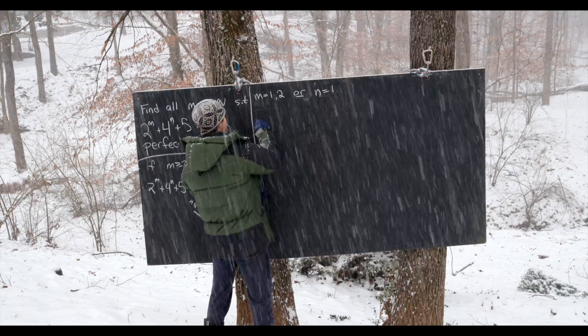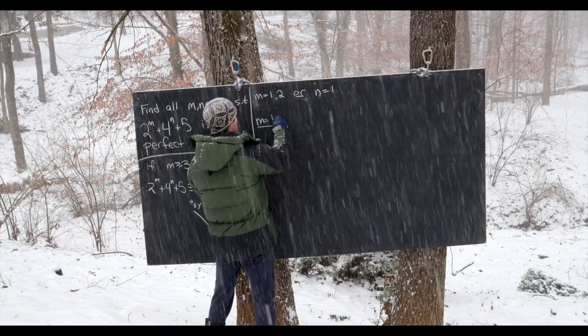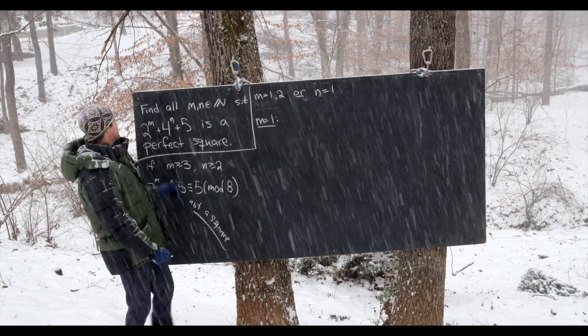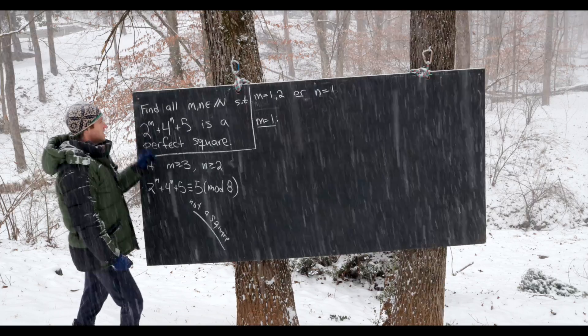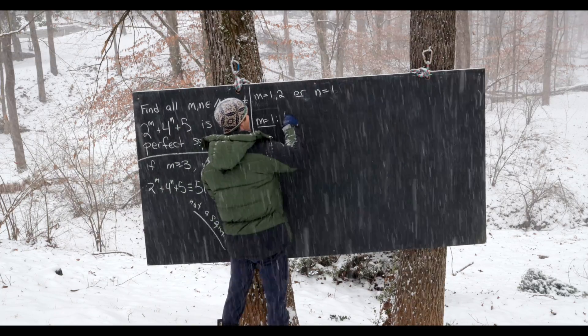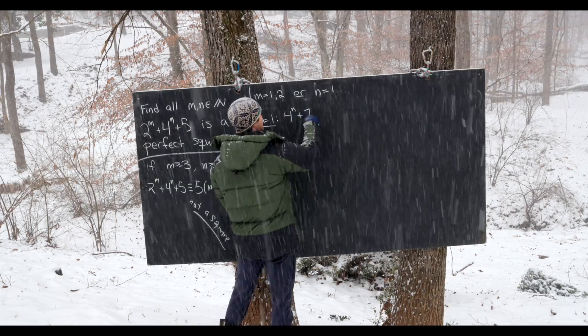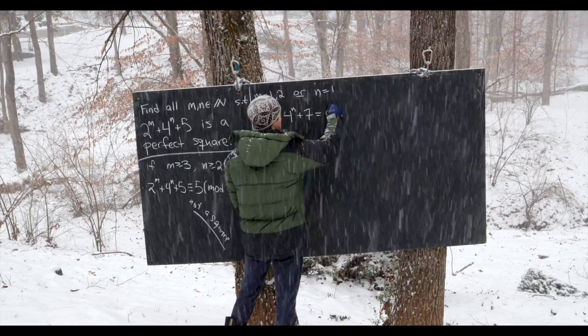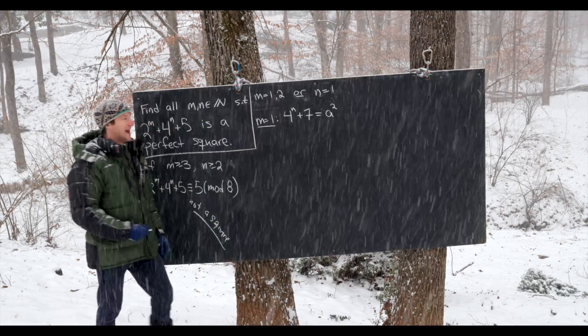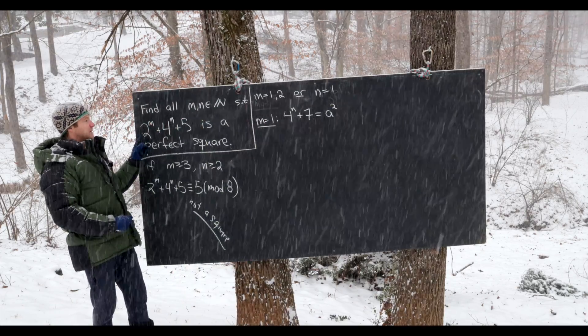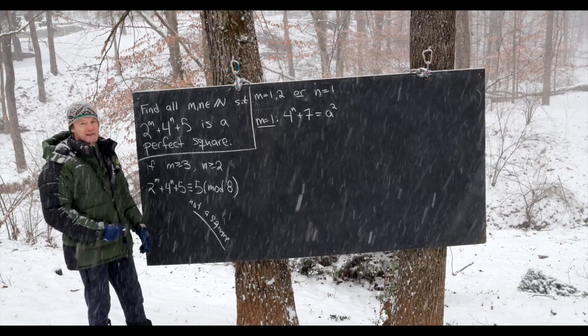So let's look at the case when m is equal to 1. So let's notice if m is equal to 1, we have 4 to the n plus 7 must be a perfect square. I'll call it a squared. That's because we have 2 plus 5 is 7.